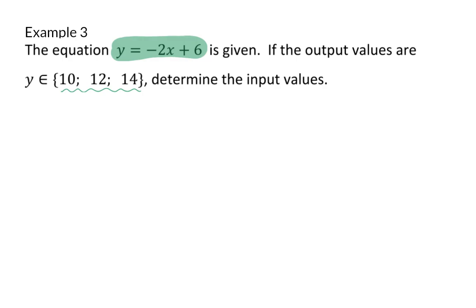To get the input values this function needs to be done backwards. This means I'm going to start off with my output value or y value and subtract 6, and this value should then still be divided by minus 2. The first output value given was 10. So we start by taking 10 and subtracting 6 to get 4, and this 4 will then be divided by minus 2 to get an input value of minus 2.